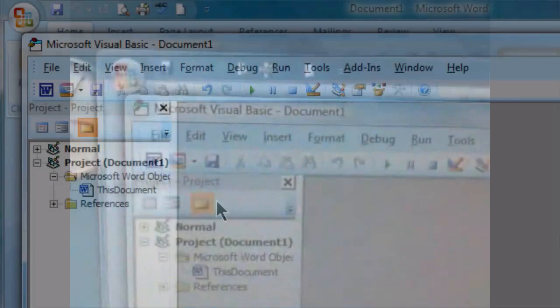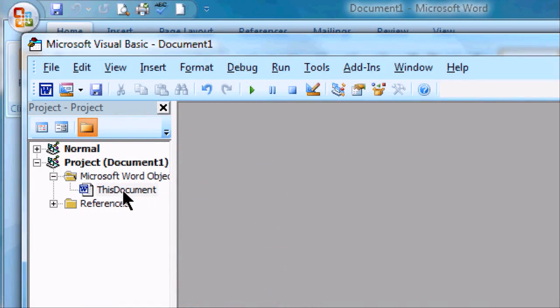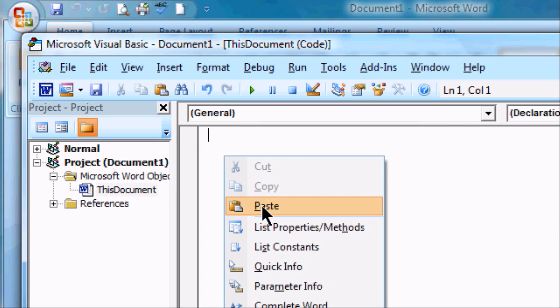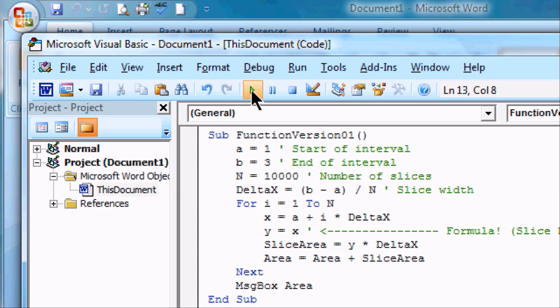Open Word. Press F11 to open the Visual Basic editor. Double click this document. Paste in the code. And click run to see your answer.